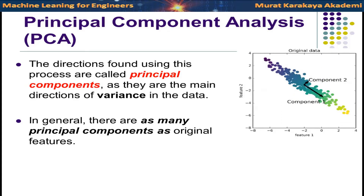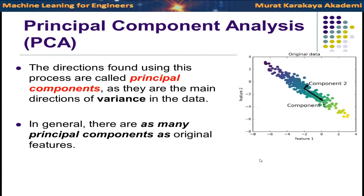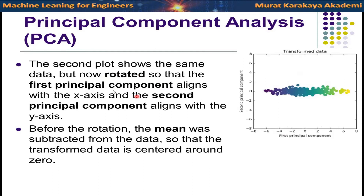After rotating the dataset with respect to the first and second principal components, we see the rotated data. This is the transformation we mentioned at the beginning — we transform the data into a new space. There is no longer feature one or feature two; instead, we have the first principal component and the second principal component values. After rotating, we can find the mean of the data and subtract it from each data point.